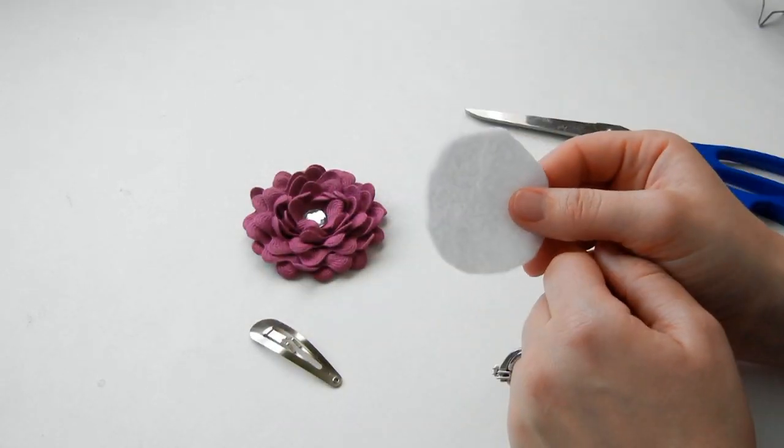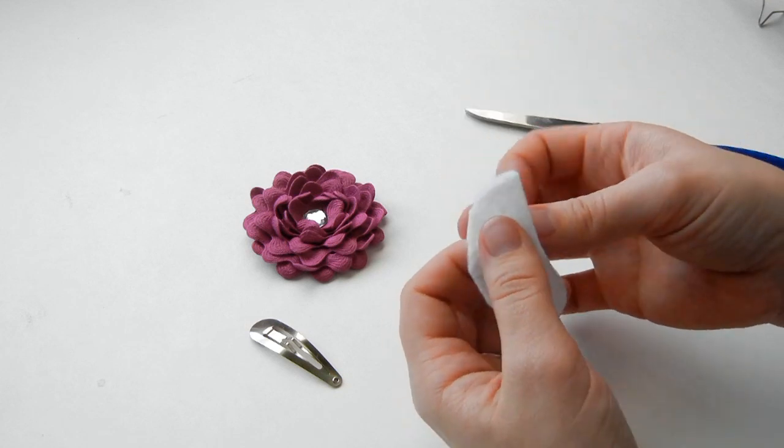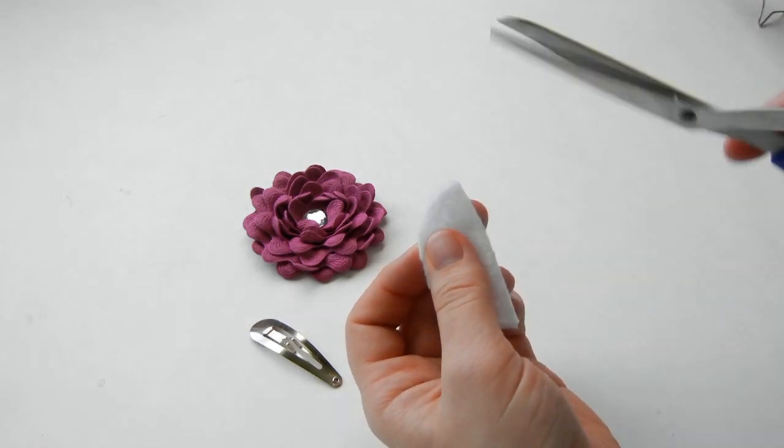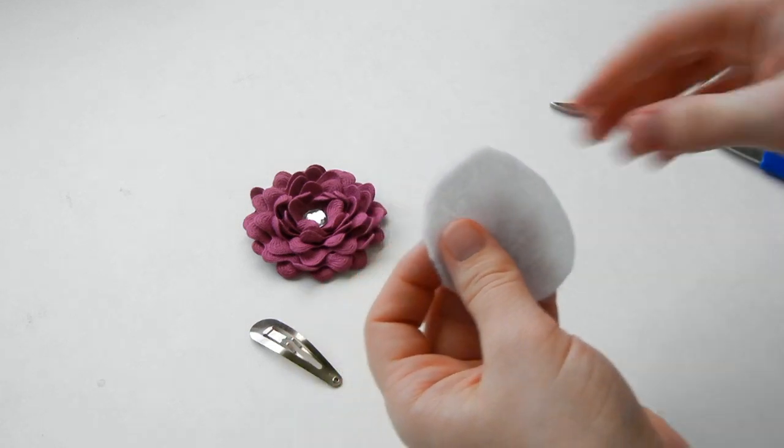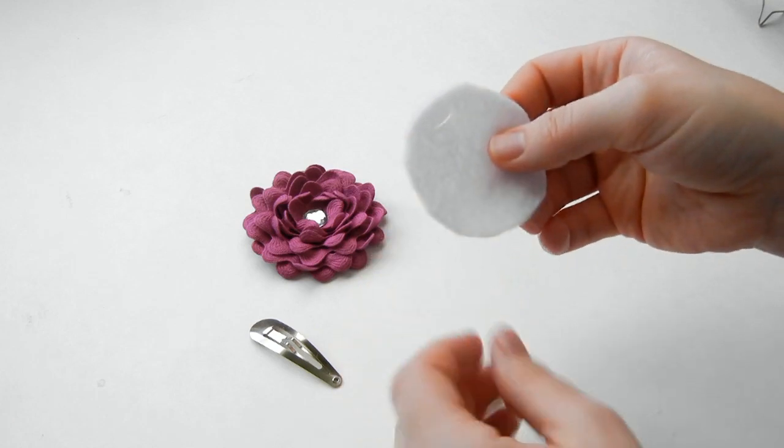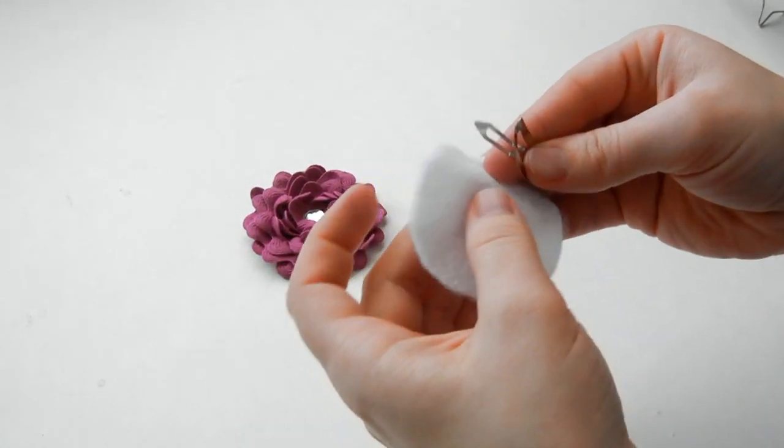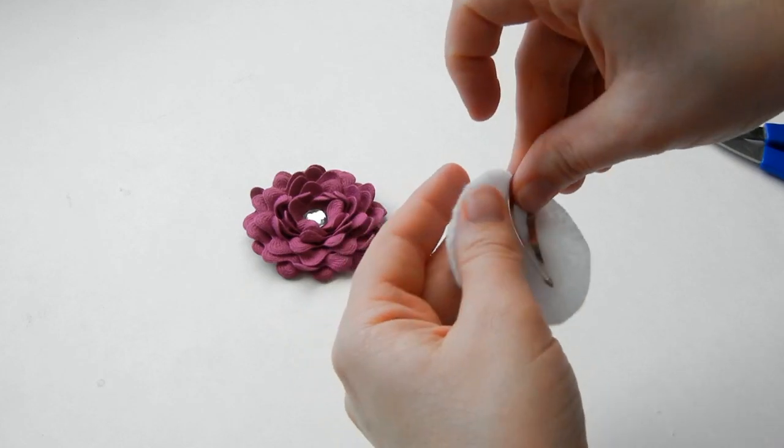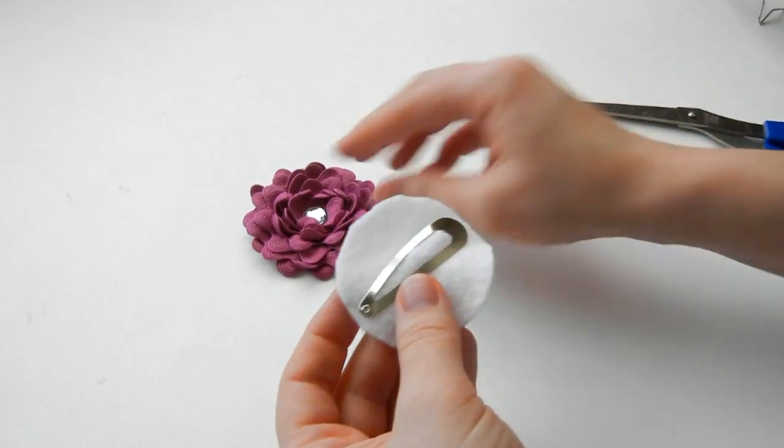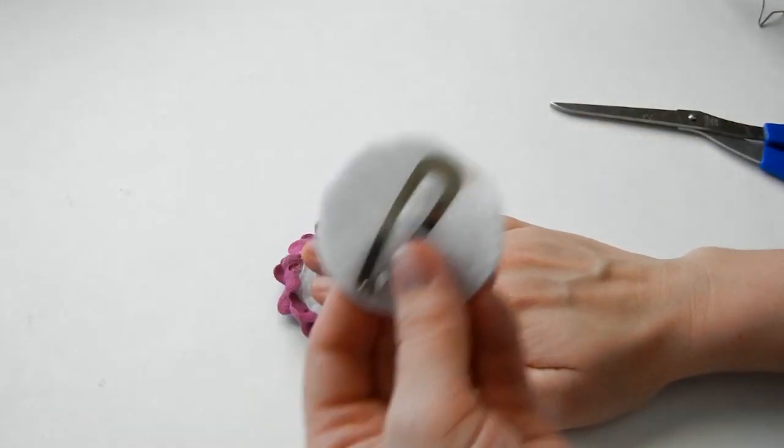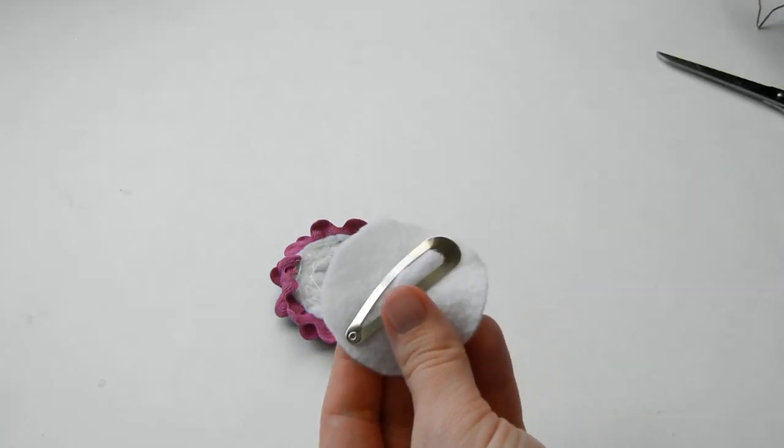So take your other felt circle and we're going to cut a tiny slit towards one side. To do that I'm just going to fold it in half and then use my scissors to just make a little slit like that. And now take your snap clip, open it up, and then slide it through. And then you can close it. And now we're going to put hot glue on the top part of this and put it down like that. So let's go ahead and do that right now.